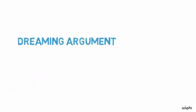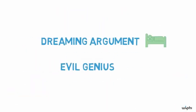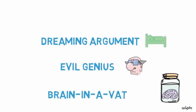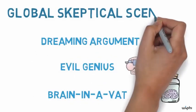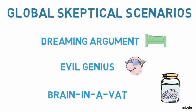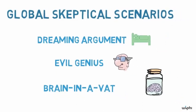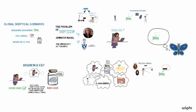The dreaming argument, the evil genius and the brain in the vat scenario are known as global skeptical scenarios. They raise doubts about virtually everything you would ordinarily take yourself to know. But skepticism doesn't have to be global. You can raise skeptical worries about some particular range of knowledge.